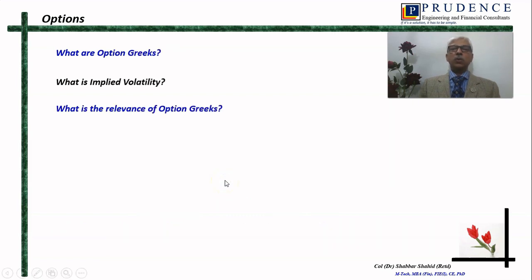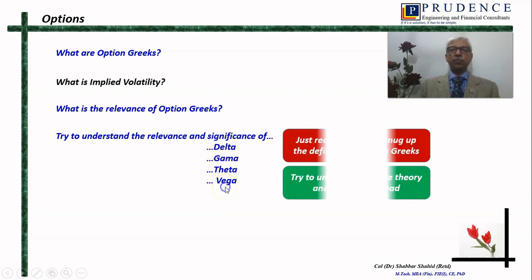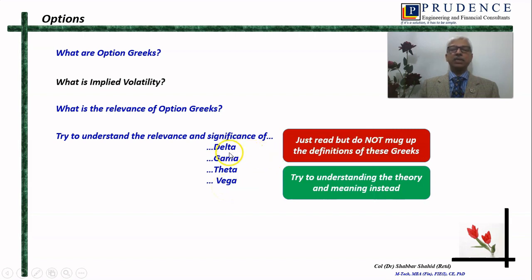If selling options involves unlimited risk, then what is the logic in selling options? Why do big players sell options? Once you are done with all these things, try to find out what option Greeks are and what their relevance is. What is implied volatility? Try to understand the meaning and relevance of the Greeks — delta, gamma, theta, and vega. There is one more Greek called rho, but I don't consider it very important. A word of caution: never try to mug up the definitions of these Greeks. Read the definition once, then try to understand the theory, the meaning, and the relevance rather than memorizing definitions.